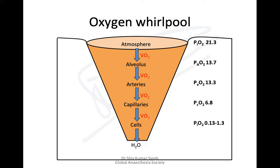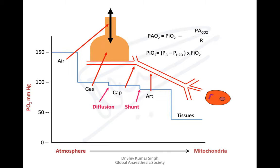The presence of water vapor brings down the pO2. At the arterial level the pO2 drops to 13.3 kPa because of shunts and dead space. It further drops to 6.8 at the capillary level, and at the mitochondrial level it is 0.3 to 1.3 kPa. This constant gradient from the alveolus to the mitochondrial level is known as the oxygen cascade.